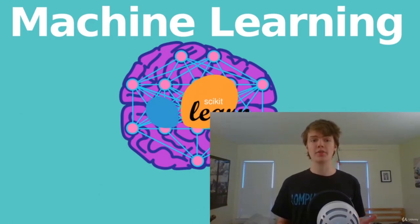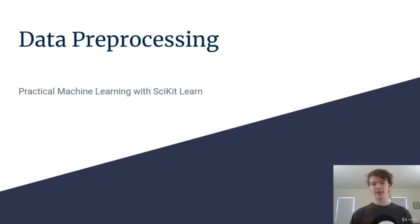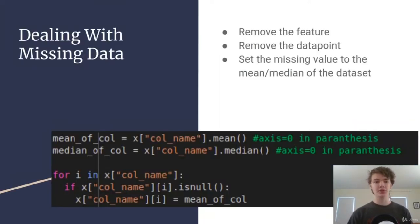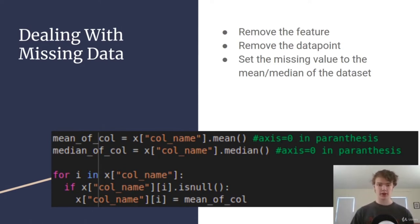In this section we're working with data pre-processing, which is really important because data is everything when it comes to what we're putting into these algorithms. First, how do you deal with missing data? The model cannot handle missing data — it will throw an error. There are three options: remove the feature entirely, remove the individual data point, or if there are only a few missing values, fill them in using the mean or median of the dataset.